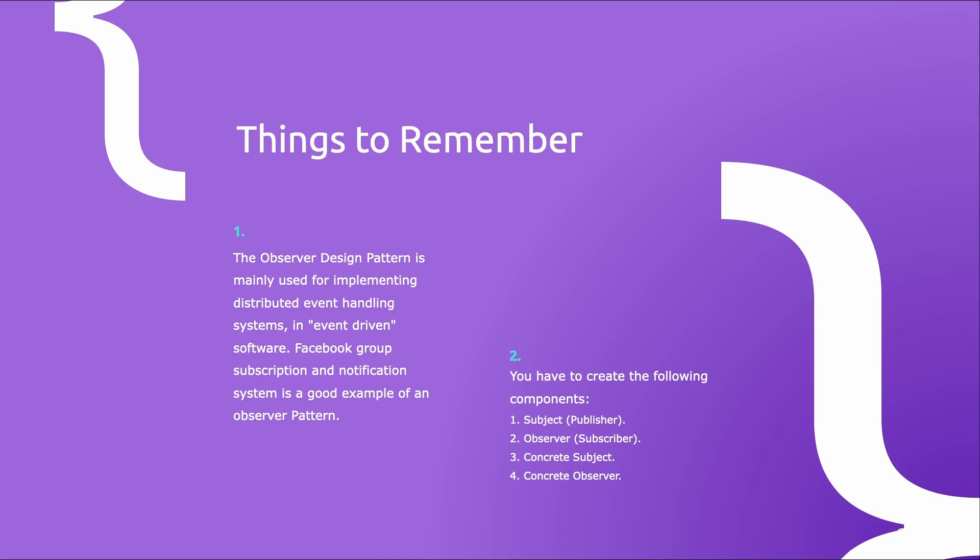Now let's do a final recap. One: the observer design pattern is mainly used for implementing distributed event handling systems in event-driven software — a good example is the Facebook group subscription and notification system. Two: you have to create the following components — a subject or publisher, an observer or subscriber, a concrete subject, and a concrete observer. Don't worry if everything isn't clear yet; it will become very clear once we start coding.